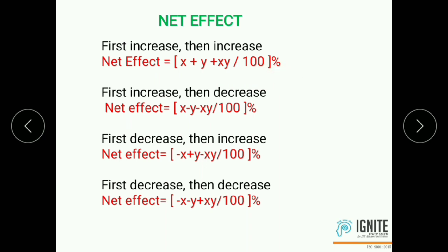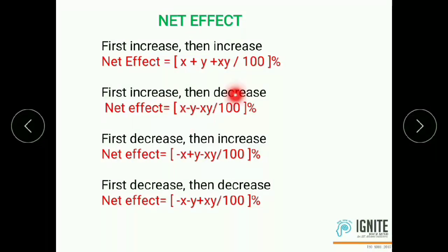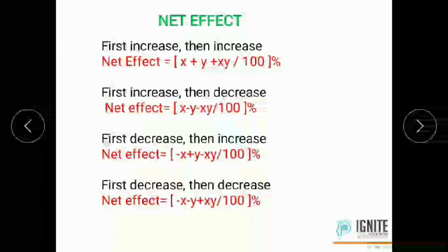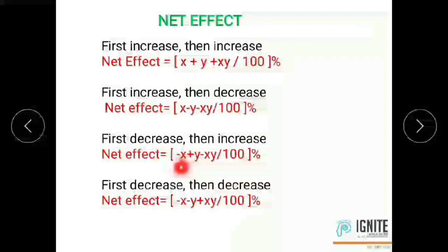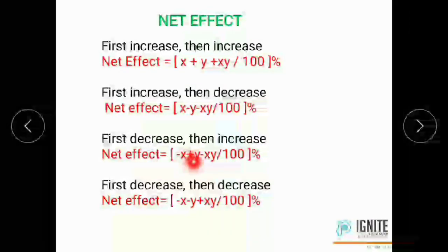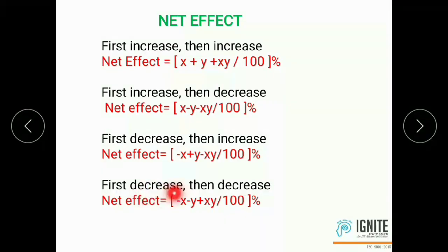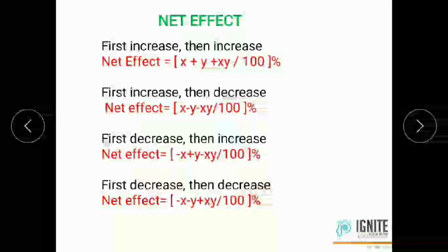Second case: first increased by x percentage and then decreased by y percentage. Net effect equals x minus y minus xy by 100 percentage. Third case: first decreased by x percentage, then increased by y percentage — net effect is minus x plus y minus xy by 100. Fourth case: first decreased by x and then decreased by y — net effect is minus x minus y plus xy by 100 percentage.